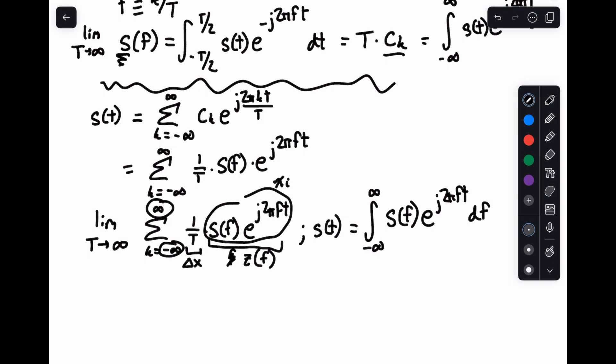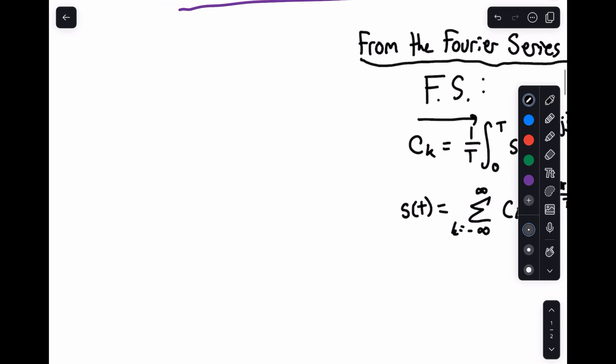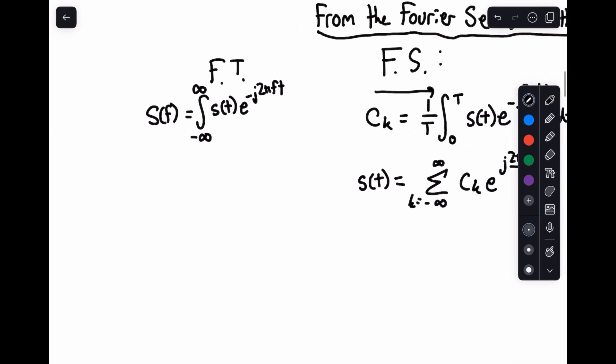And sure enough, this is indeed what we see. So let's write these down. This is the Fourier series and this is the Fourier transform. S(f) equals the integral from minus infinity to plus infinity of our time function times e to the minus j 2π ft dt. And we get back to the time domain by saying s(t) equals the integral from minus infinity to infinity of S(f) e to the plus j 2π ft df.